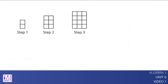Sometimes, a quadratic relationship can be expressed without an obvious square term. Let's take this pattern of squares for example. From the first three steps, we can see that both the length and the width of the rectangle increase by one at each step. Step 1 is a 1 by 2 rectangle, step 2 is a 2 by 3 rectangle, and step 3 is a 3 by 4 rectangle. This suggests that step n is a rectangle with side lengths n and n plus 1.